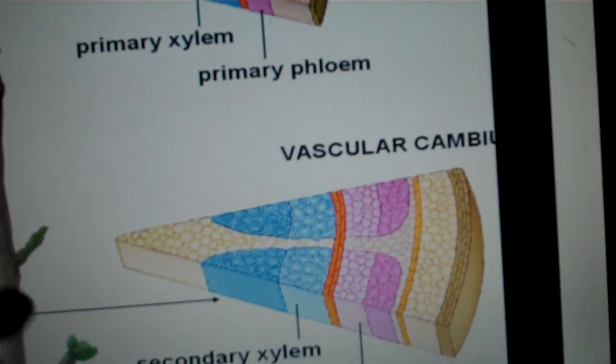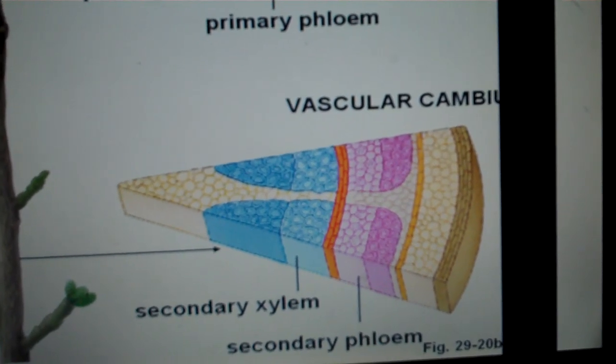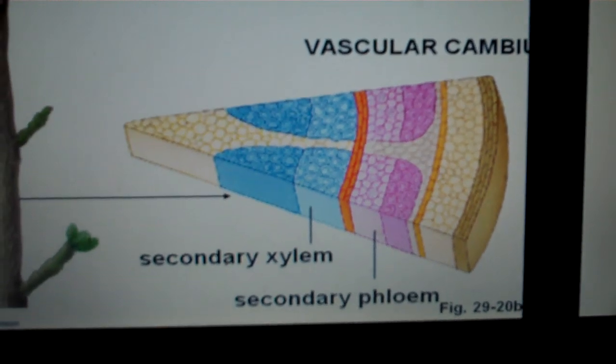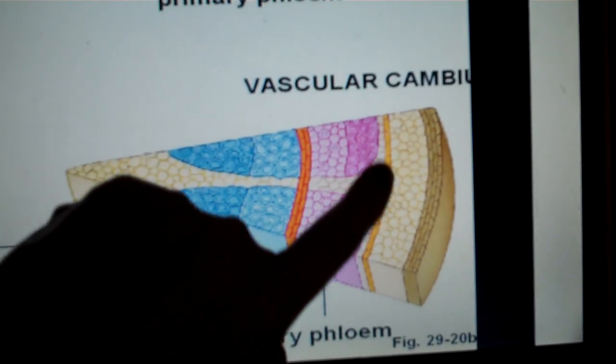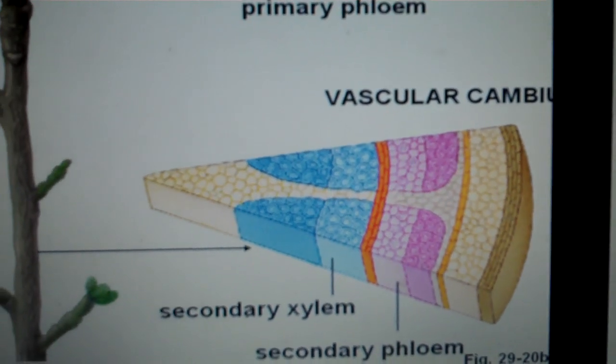Over time, the plant grows stronger and wider because the vascular cambium adds secondary xylem and secondary phloem. Just in case you're wondering, this yellow line here is the cork cambium, which we will discuss in the next section.